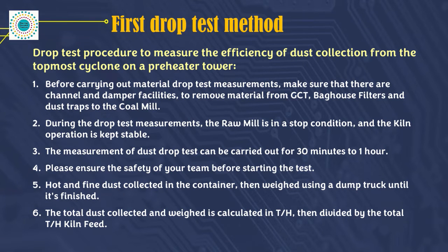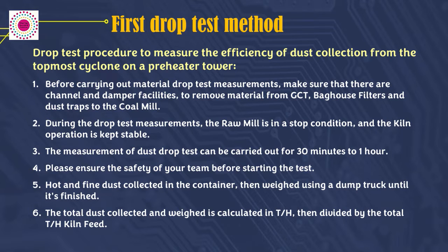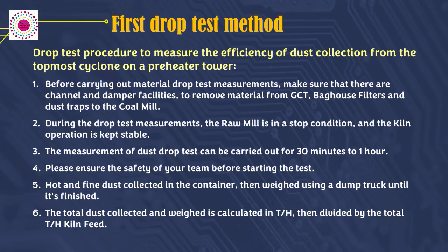Please ensure the safety of your team before starting the test. The measurement start time and stop time are recorded correctly. Hot and fine dust collected in the container is then weighed using a dump truck until finished. The total dust collected and weighed is calculated in tons per hour, then divided by the total tons per hour of kiln feed, and the percent dust collection efficiency of the topmost preheater cyclone is calculated.